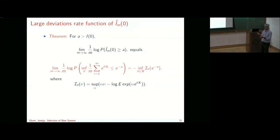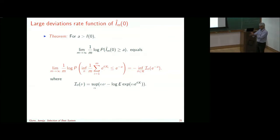Key negative result: let L denote a collection of probability distributions with finite mean, unbounded positive support, that are mutually absolutely continuous. Let P_{epsilon,delta} denote a policy that can adaptively sample from any two distributions in L, separated by epsilon in mean, and find the correct one with probability of false selection bounded by delta. The theorem states: for any two distributions in L with means arbitrarily apart, a P_{epsilon,delta} policy on average requires more than order log(1/delta) samples.